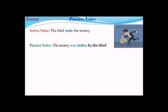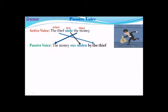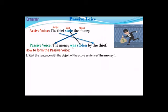To recap: the active voice is 'The thief stole the money' and the passive voice is 'The money was stolen by the thief.' The object of the active sentence becomes the subject of the passive sentence. The subject of the active sentence becomes the object of the passive sentence. The main verb changes to the past participle, and we add 'to be' conjugated in the same tense as the active verb.